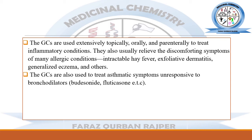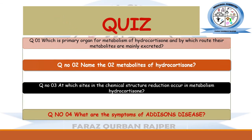The detailed role and other biological actions of cortisol will be discussed in the upcoming lecture. Now let's have a quiz. These are some simple basic questions from this lecture — you may post your answers in the comment section. Question 1: What is the primary organ for the metabolism of hydrocortisone and by which route are the metabolites excreted? Question 2: Name the two metabolites of hydrocortisone. Question 3: At which sites in the chemical structure do reduction reactions occur in the metabolism of hydrocortisone? Question 4: What are the symptoms of Addison's disease? This is all about this lecture. If you have any questions, you may ask in the comment section. Thank you so much. Allah bless you all.